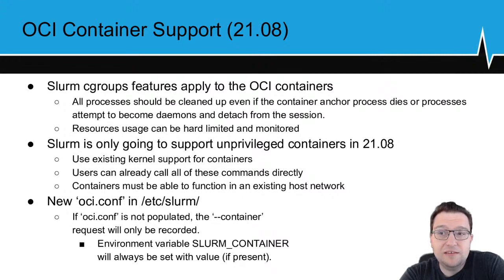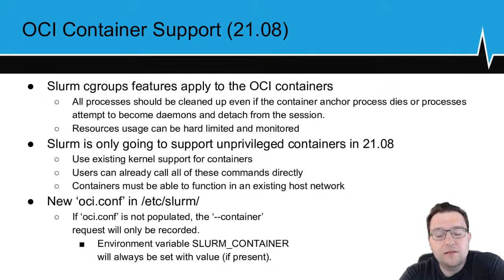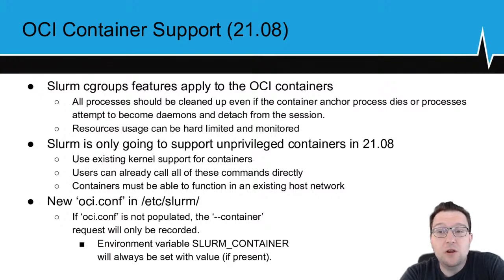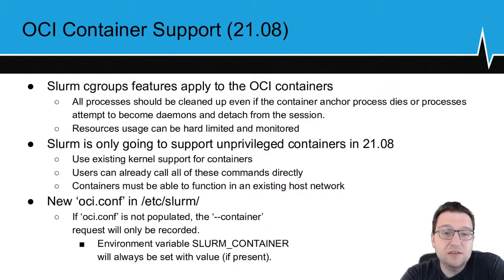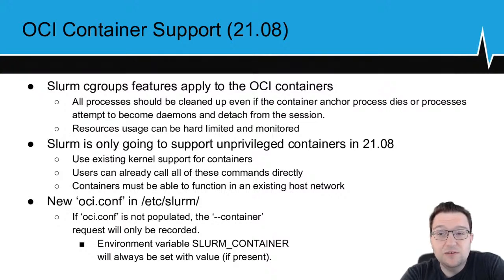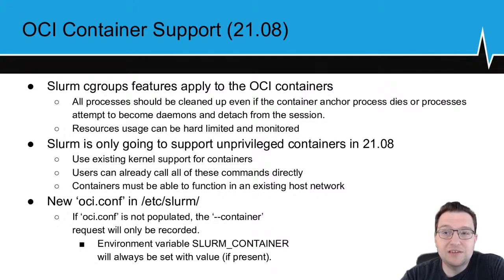This is all done thanks to kernel support, and it's easy to test if your kernel has it — that's provided in the container documentation. There is a new oci.conf configuration file. If this file is not populated or doesn't exist, --container only acts as a suggestion: it is recorded and provides a single environment variable and does nothing else. This ensures sites that don't wish to implement it and continue using existing solutions will not be affected. The oci.conf has quite a few parameters and allows use of any OCI runtime the site wishes — Slurm doesn't have a preferred runtime and is meant to be universal.